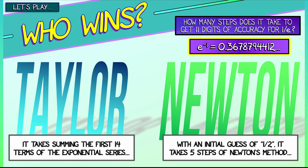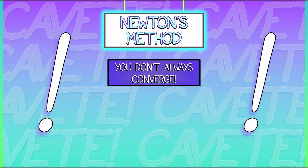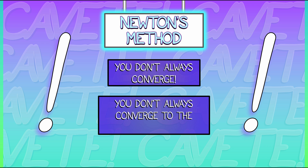That's pretty good, but it does seem to depend on the initial condition. This takes us to the warnings: you have to be careful with Newton's method. In all the examples we've done, we always converge quickly and cleanly, but you do not always converge. And if you do converge, you do not always converge to the solution you were looking for. If your equation has multiple roots, you can have problems.